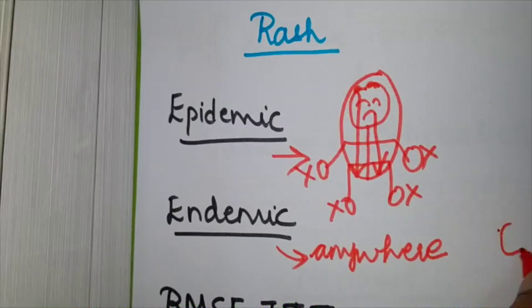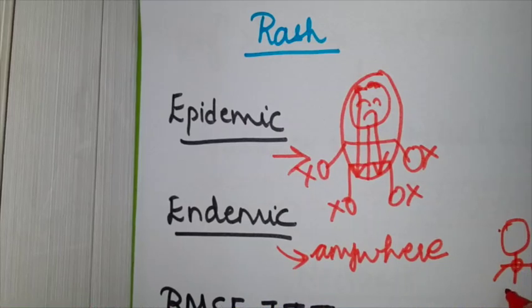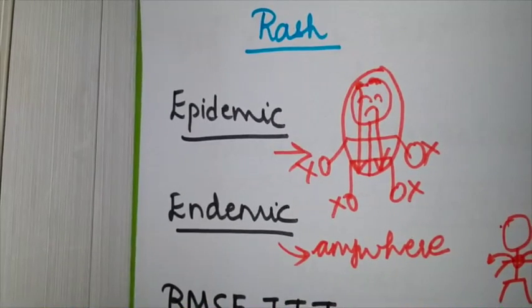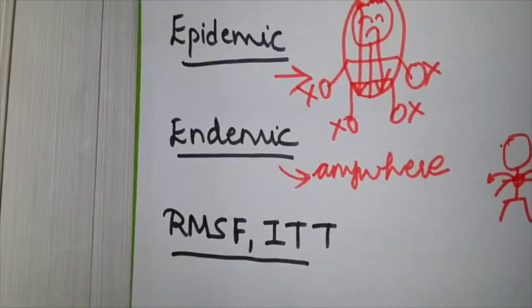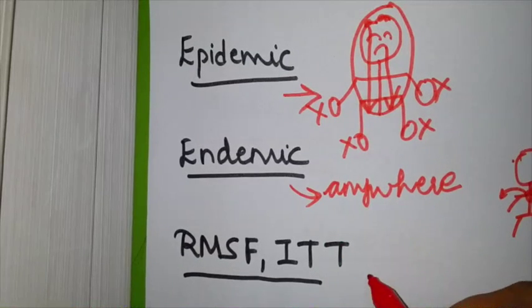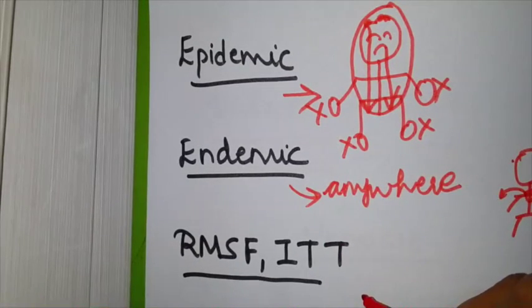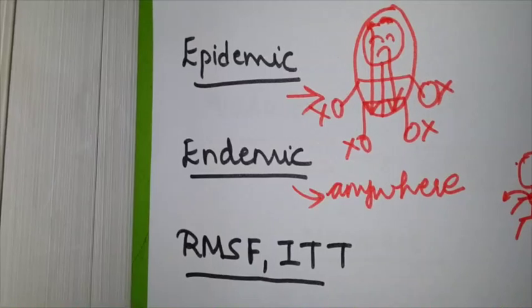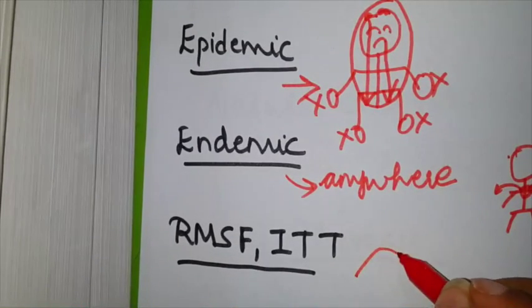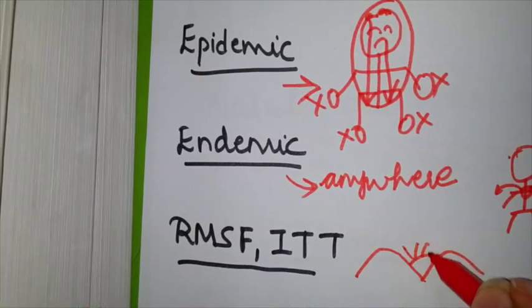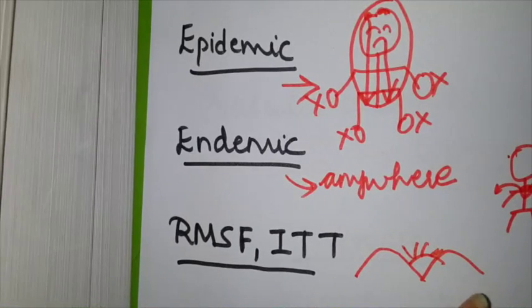Endemic—endemic is persistent throughout all. Endemic rash can occur anywhere and everywhere. Endemic is everywhere. Epidemic is rash except in palms and soles. For those who want more complicated stuff, endemic first starts in the trunk and follows to extremities.